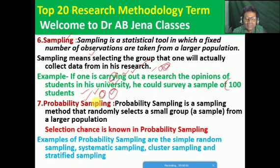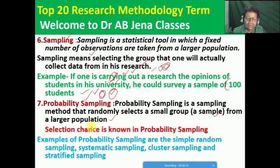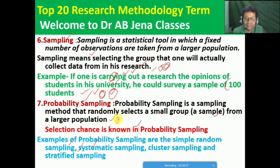What is probability sampling? Probability sampling is a sampling method that randomly selects a small group — the sample — from the larger population. The selection chance is known in probability sampling. Examples of probability sampling are simple random sampling, systematic sampling, cluster sampling, and stratified sampling. Kindly go through the posted video where I have already discussed these by citing suitable examples.